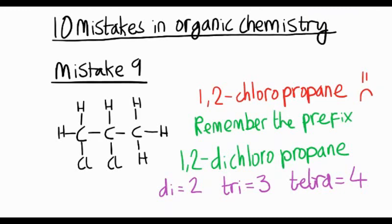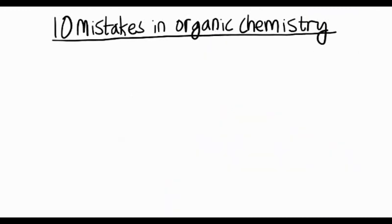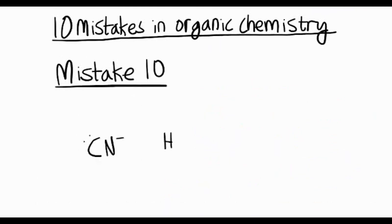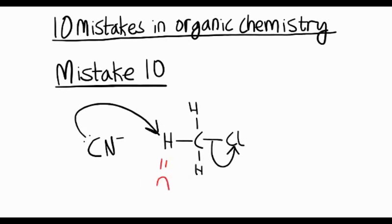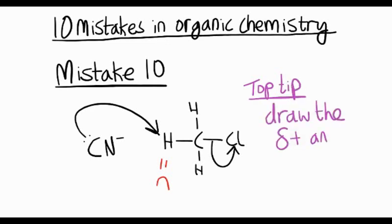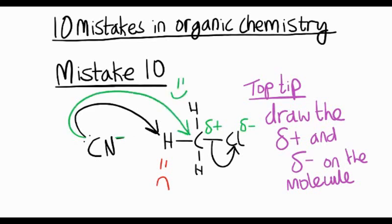Finally, mistake 10. This is to do with mechanisms. Let's look at the familiar nucleophilic substitution as an example again. Nucleophilic substitution using a cyanide ion this time and chloromethane. You may be able to see the problem here. We're attacking the wrong atom. We can't attack that hydrogen atom. Top tip: remember to draw the delta plus and delta minus charges on the molecule. That will help guide your mechanisms. There's a delta minus on chlorine, delta plus on carbon. Chlorine is more electronegative, so we attack the delta plus carbon.